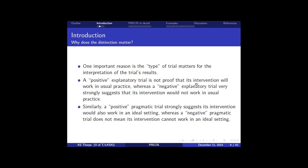And so over a period of a few years, we developed this, what we've called the Pragmatic Explanatory Continuum Indicator Summary, or PRECIS for short. And we described ten domains in which trial decisions are made that affect the degree to which a trial is pragmatic or explanatory. And these are the ten that we came up with.